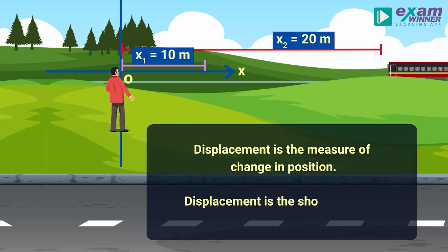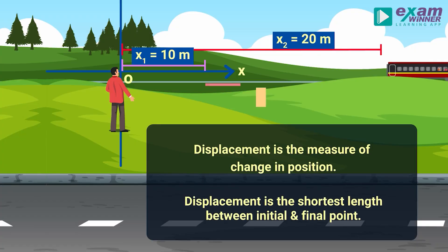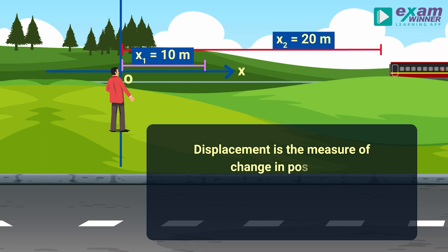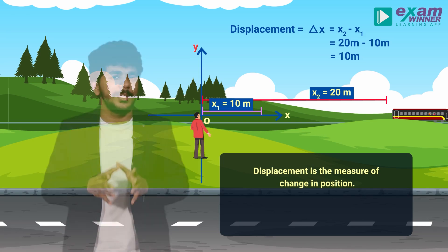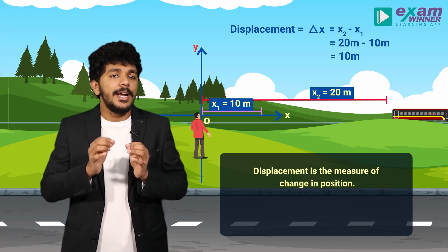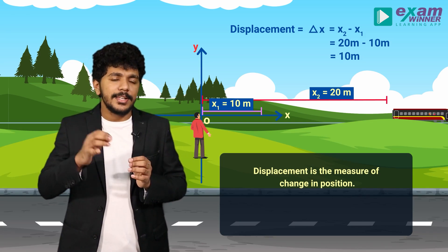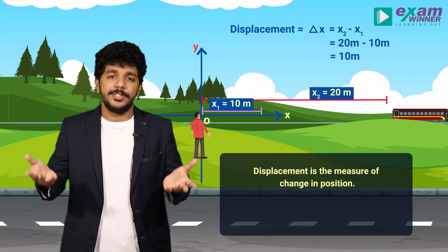What is the definition of displacement? Displacement is the measure of the change in position. The change in position is what we call displacement.